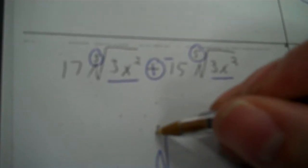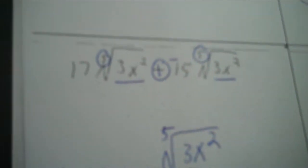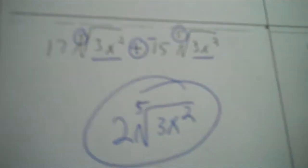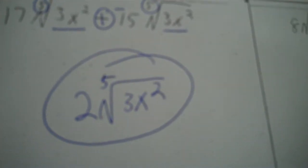Plus negative, so your radicals are of a degree five — and what do you know, the inside expression matches. So radical five, and then I put three x to the second, and then 17 plus negative 15 is two. So two fifth root of three x squared.